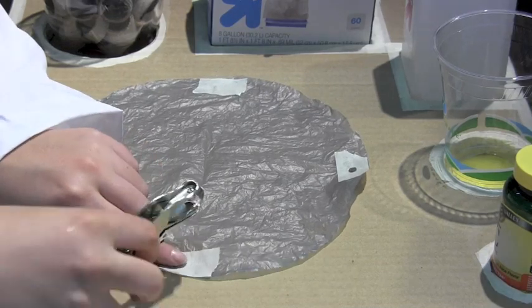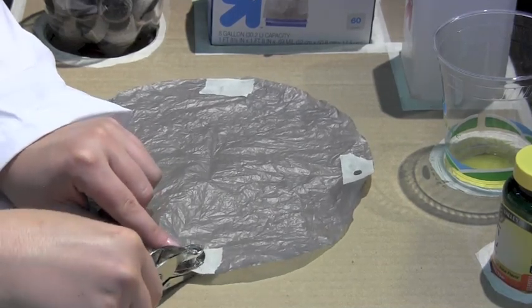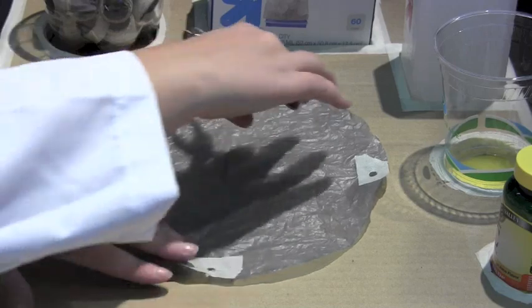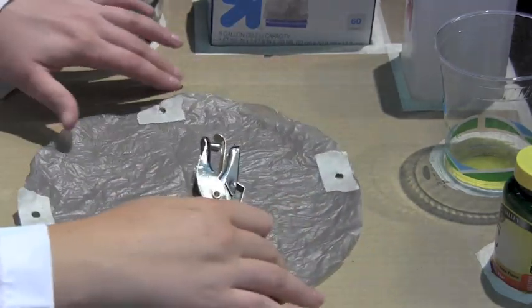Then take your hole puncher and punch another hole along this crease. Turn your bag and punch a hole at the other end of the crease.